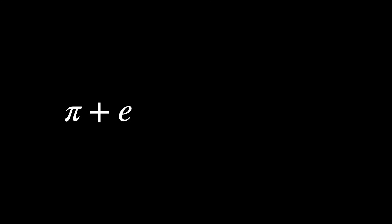A weird fact is that if you add two transcendental numbers together or multiply them, it doesn't guarantee that you end up with another transcendental number. For example, pi plus e and pi times e are suspected to be transcendental, but nobody could prove it so far.